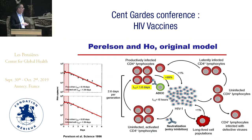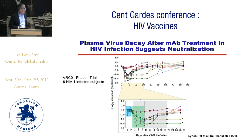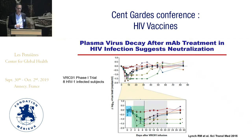If, however, ADCC is operative, you'll start to see killing of cells and you'll see an immediate decline. So one thing we could look at is whether we see this plateau or delay in antiviral effect in our clinical trials. We went back to our original study of VRC01 in viremic individuals, and the normalized data shows it's pretty flat for about two days before we see the antiviral effect. This suggests that probably neutralization is a major component of the antiviral effect.